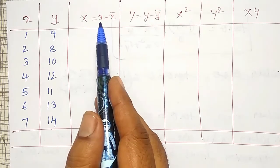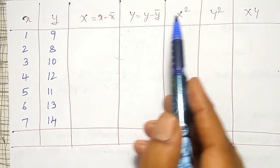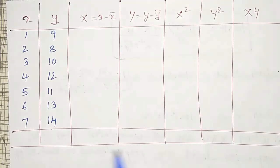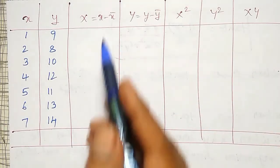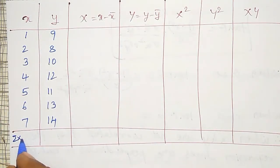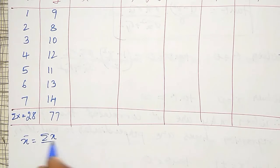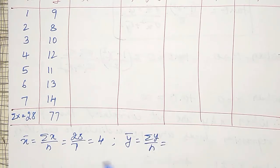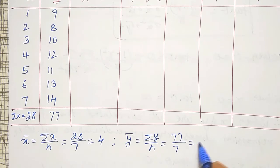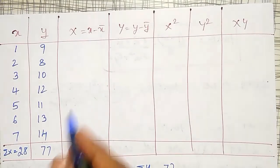My required columns are capital X (x minus x̄), capital Y (y minus ȳ), X squared, Y squared, and X times Y — and I need their summations. To find x̄, summation of small x is 28 and summation of small y is 77. So x̄ equals 28 divided by 7, giving x̄ equal to 4. And ȳ equals 77 divided by 7, which gives ȳ equal to 11. Using these values, I will now fill in the table columns.